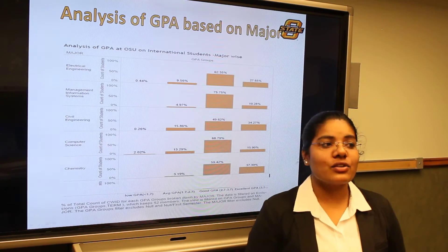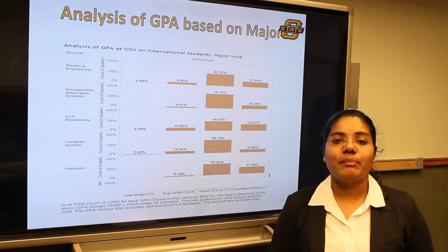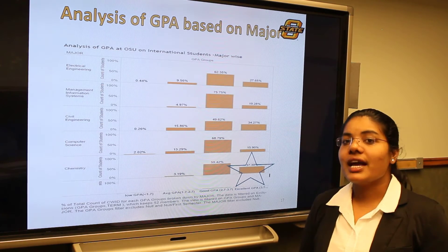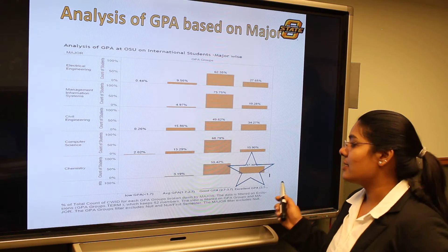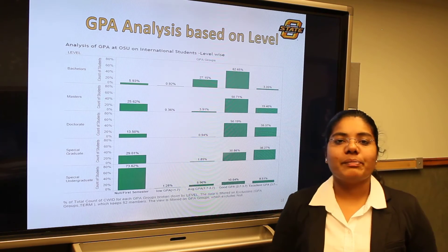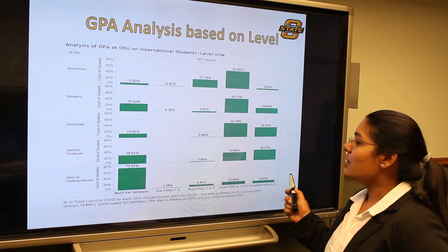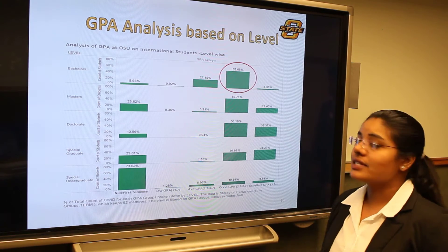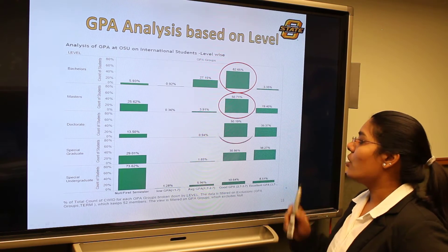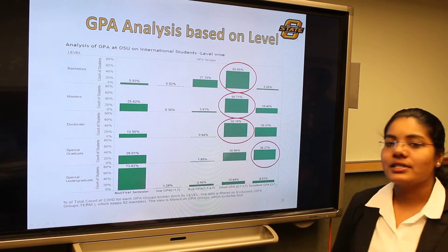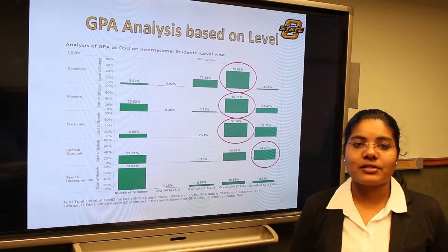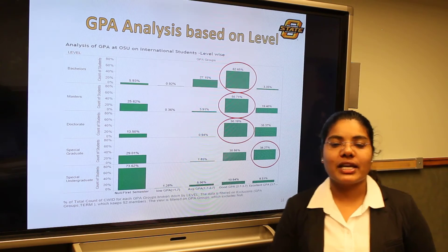Our main objective is the analysis of GPA performance, and here is an analysis of which branch is doing the best at OSU. We have categorized GPA into four categories: low, average, good and excellent. The chemistry department has most students doing excellent, and the MIS department has most students at good GPA. Regarding GPA by level, bachelor's degree students stand at good GPA with 62.65%, master's students at good GPA with 50.71%, and doctorate students at good GPA with 50.19%. Special graduate students stand mostly at excellent GPA at 38.27%. This shows various factors affect student performance. The further analysis will be taken by Gopinath.